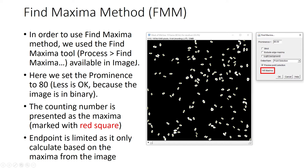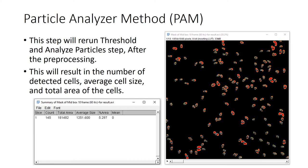For the Particle Analyzer Method, we rerun the threshold and Analyze Particles steps after pre-processing. This will extract the cell count, and additionally the total area of all cells and the average size of the cells. From this example image, the count is 145 — the same as the Find Maxima result — with a total area of 181,482 pixels and an average cell size of 1,251.6 pixels.